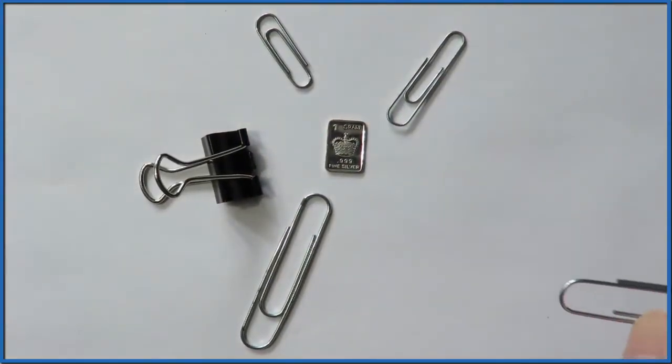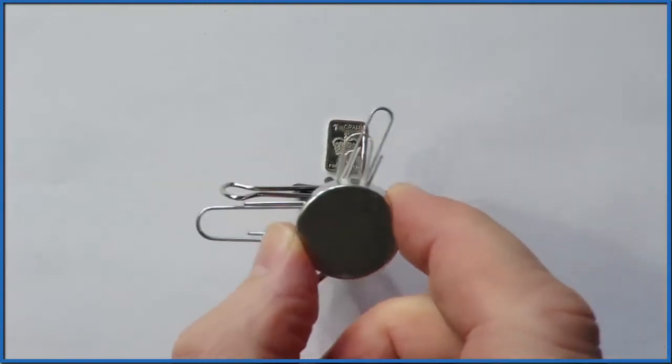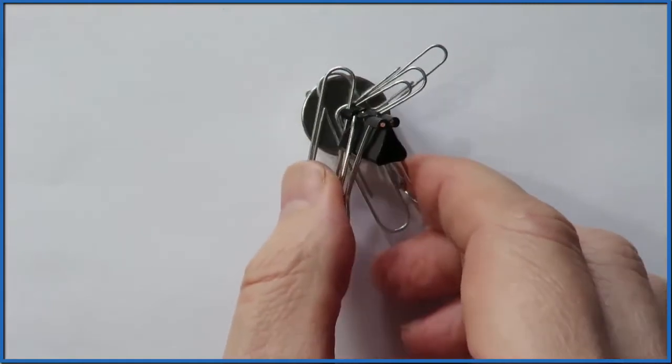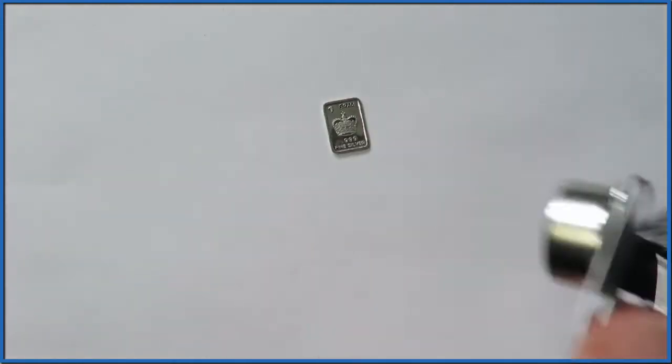You can see I have a neodymium magnet, a rare earth magnet that's very strong, and it attracts the paper clips—pulls them right up. But the silver just is not attracted to the magnet, so I think we can say that silver is not magnetic.